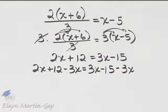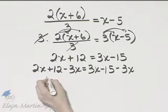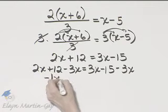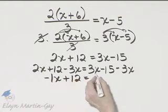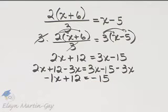It makes no difference whether you move variable terms to the left side or to the right side. You will still solve correctly. 2x minus 3x, that's negative 1x, or negative x, plus 12 is equal to, the 3x is subtracted out, and I have negative 15.